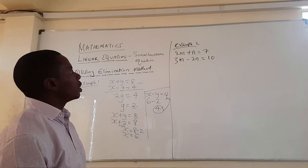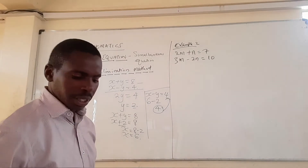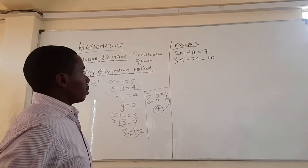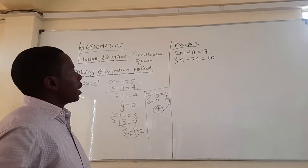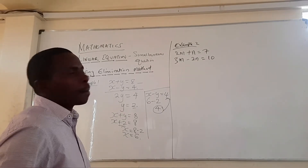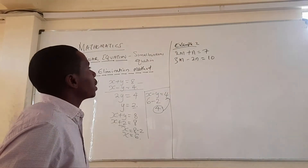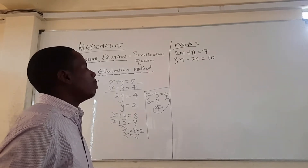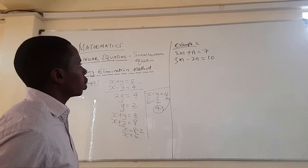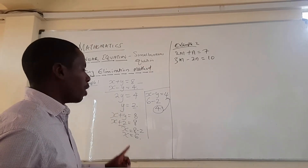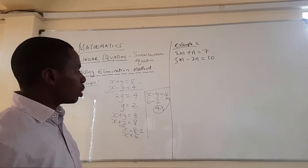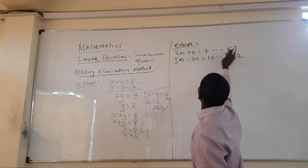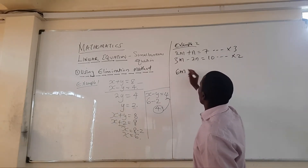The first thing is to decide what you want to eliminate — is it m or n? Let's eliminate m. To eliminate m, we need the coefficients of m to be equal. The coefficient in the first equation is 2 and in the second is 3. We find the LCM of 2 and 3, which is 6. To make them both 6, we multiply the first equation by 3 and the second equation by 2.